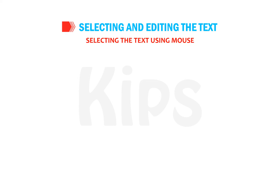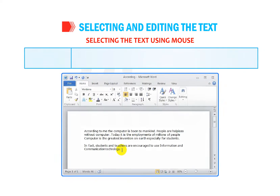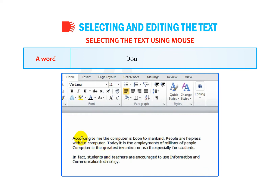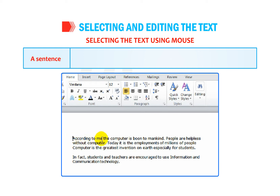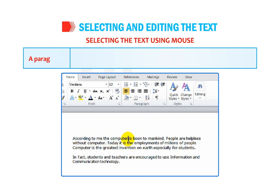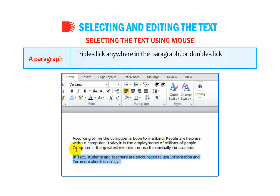Let us understand how to select text using the mouse. To select a word, double click on the word. To select a sentence, hold down the Ctrl key and click anywhere on the sentence. To select a paragraph, triple click anywhere in the paragraph, or double click in the left margin of the paragraph.